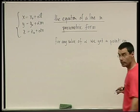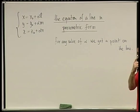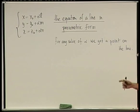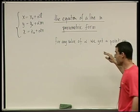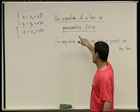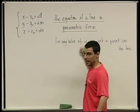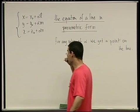So this is the equation of a line. To rewrite it: x equals x0 plus alpha l, y equals y0 plus alpha m, and z equals z0 plus alpha n — this is called the equation of a line in parametric form, because it depends on the parameter. For any value of alpha, we get a point on the line.